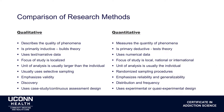Comparing these research methods: we're dealing with the quality of phenomena versus the quantity. Qualitative research is inductive — it builds theory from the ground up — versus quantitative, which is more deductive. It uses text and narrative versus numerical data. The focus of the study is more localized, whereas quantitative data can be local, national, or international. The unit of analysis is usually larger than the individual, whereas the individual is most represented in quantitative work.